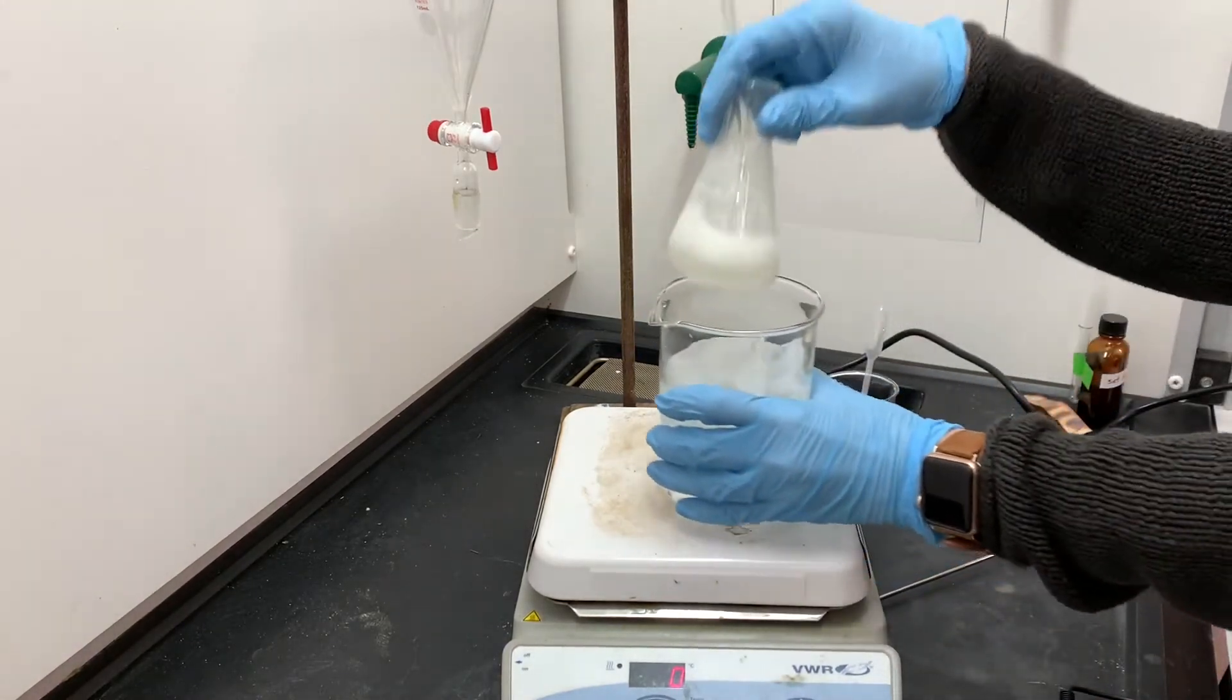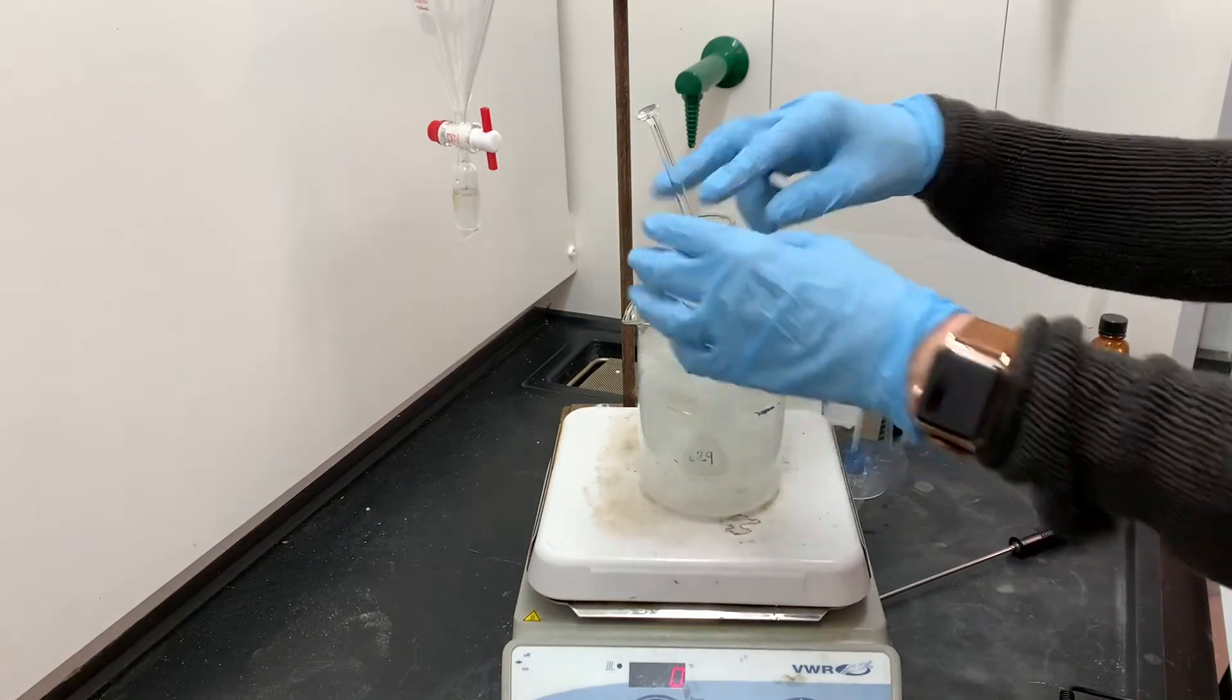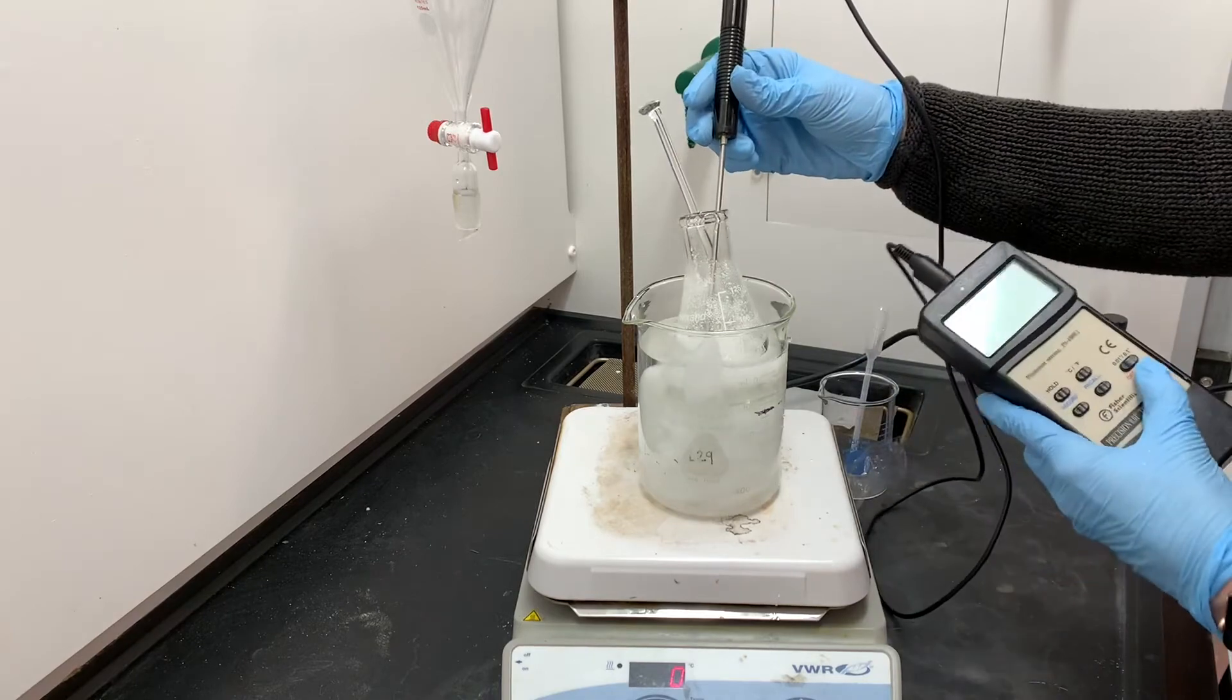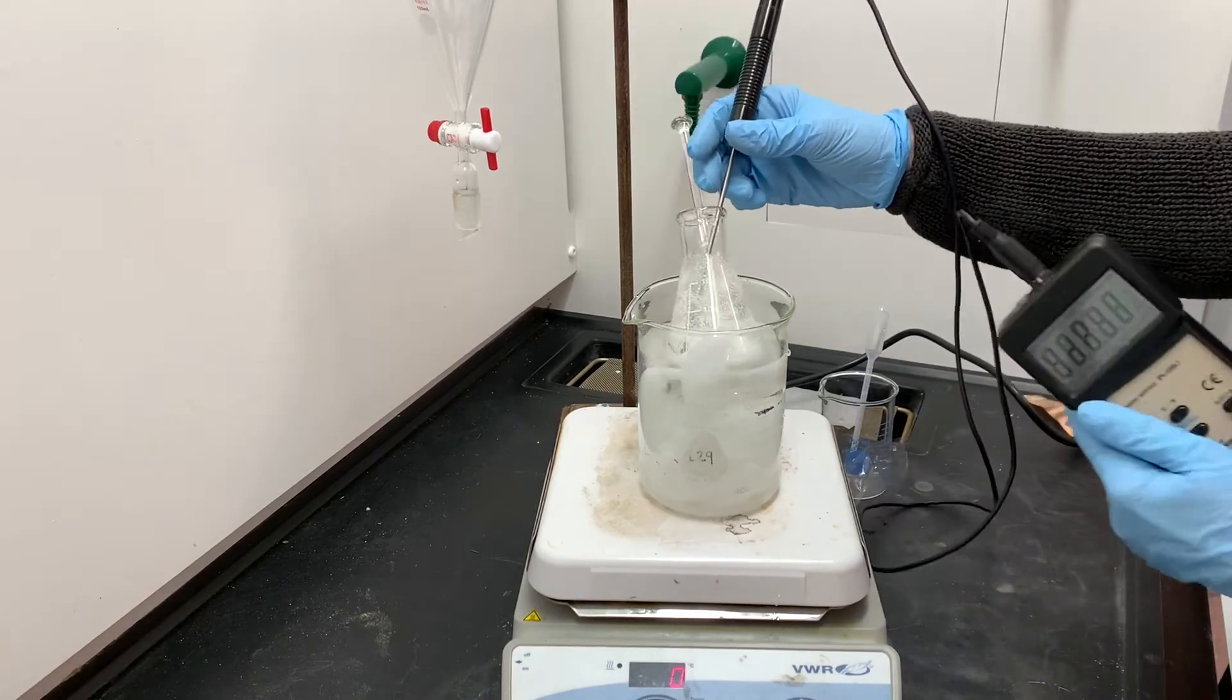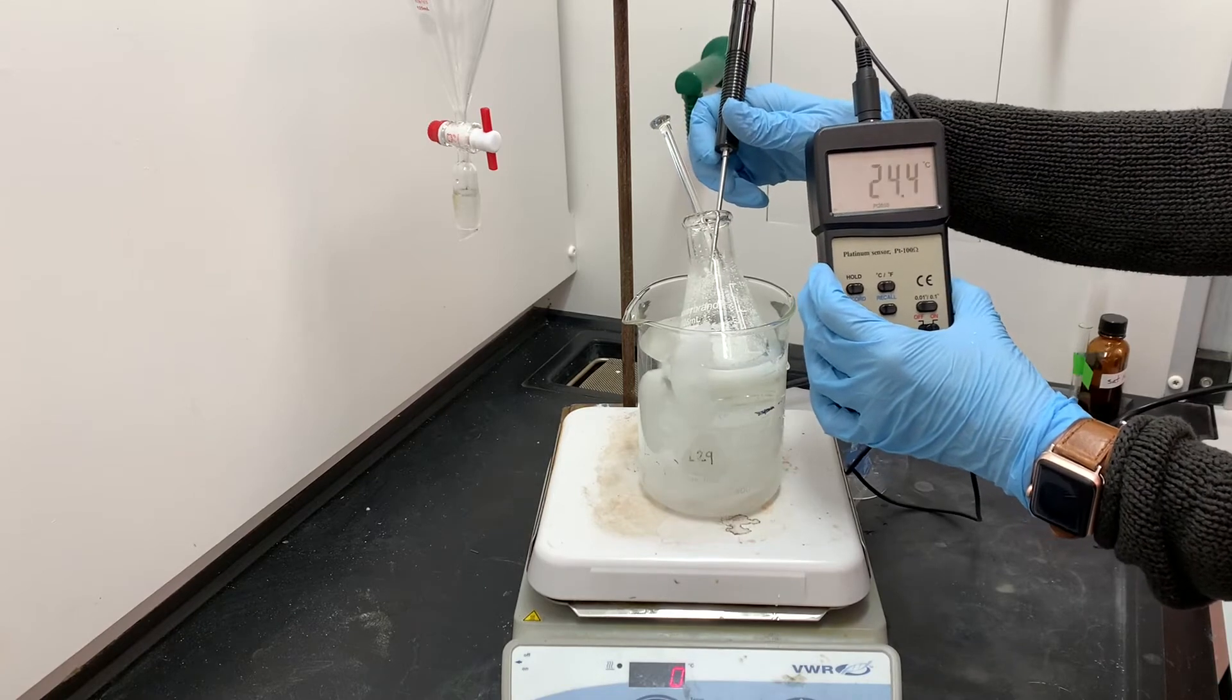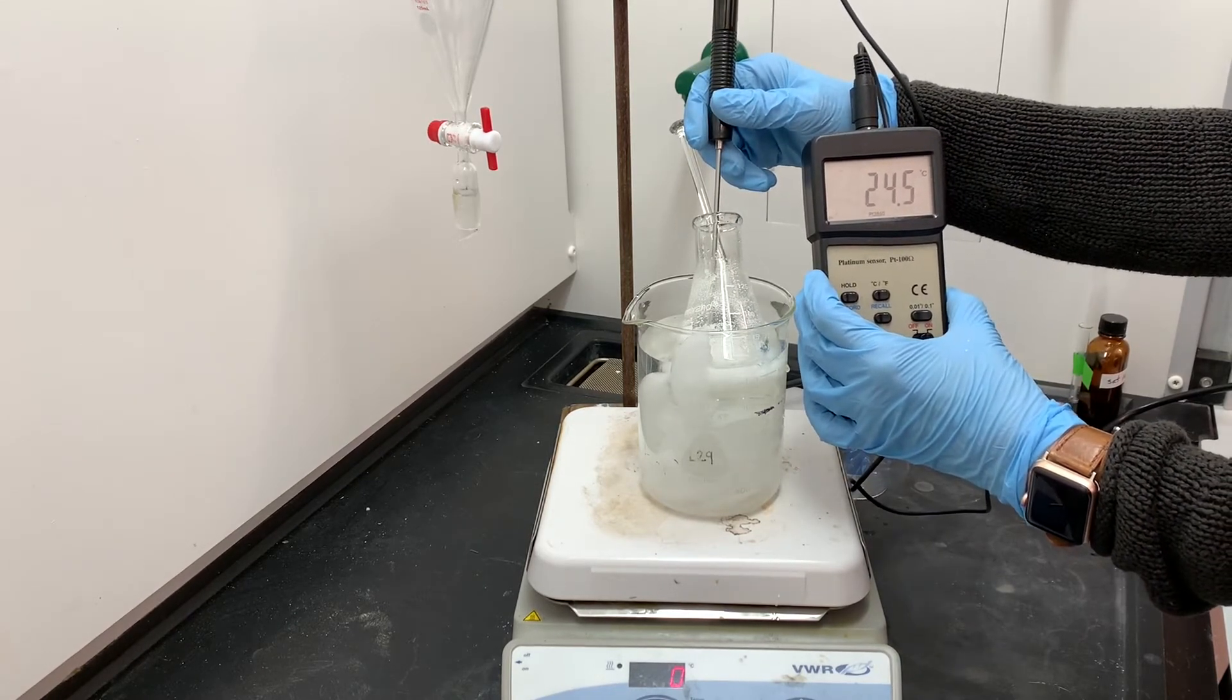All of the bleach has been neutralized, so we're going to put this solution on an ice water bath and let it finish crystallizing so that we can filter it out. The directions tell us that our solution, not the ice water bath, but the solution itself, needs to get all the way down to 5 degrees Celsius. So I'm going to be using a thermometer to monitor the temperature as this solution cools.